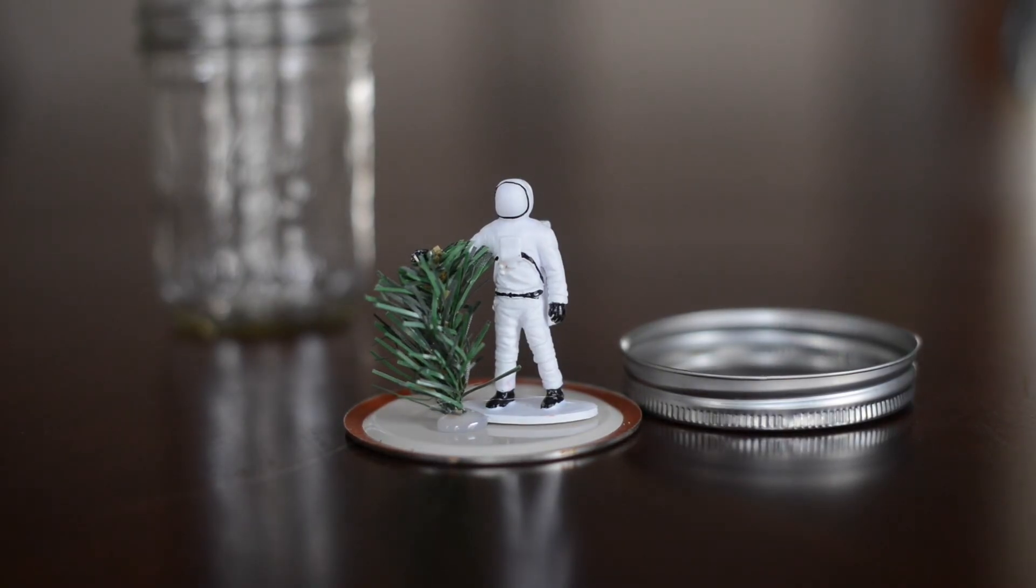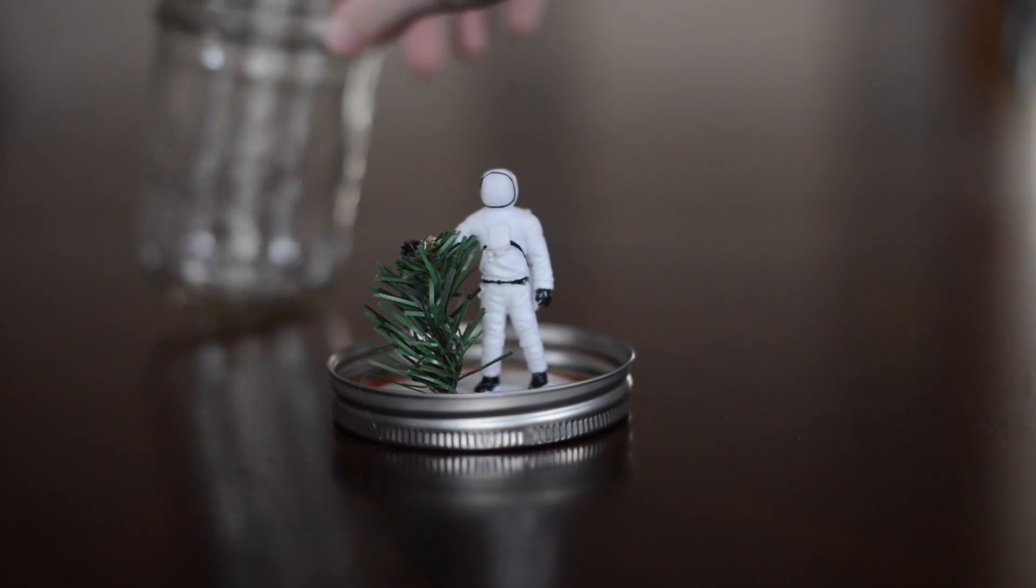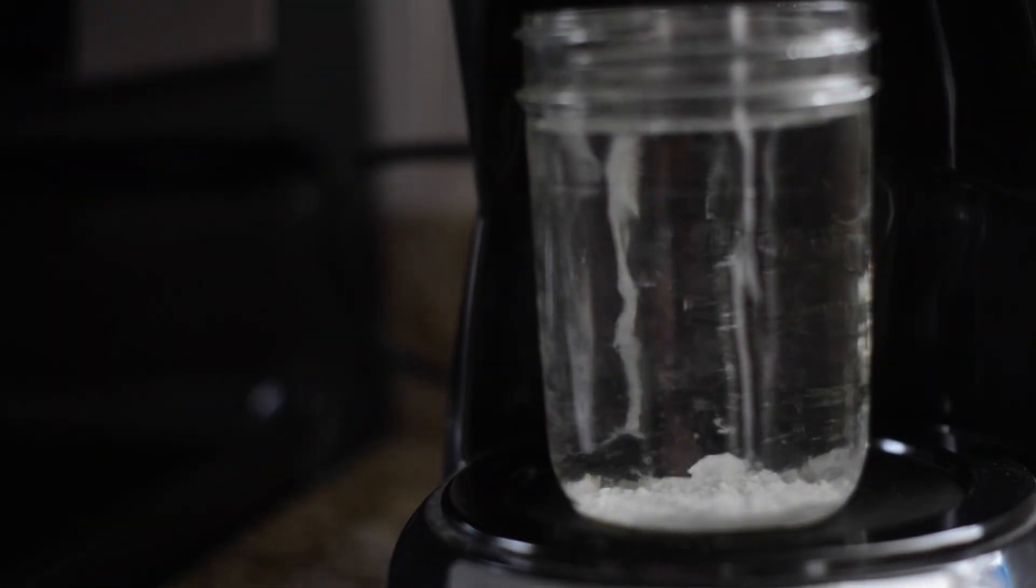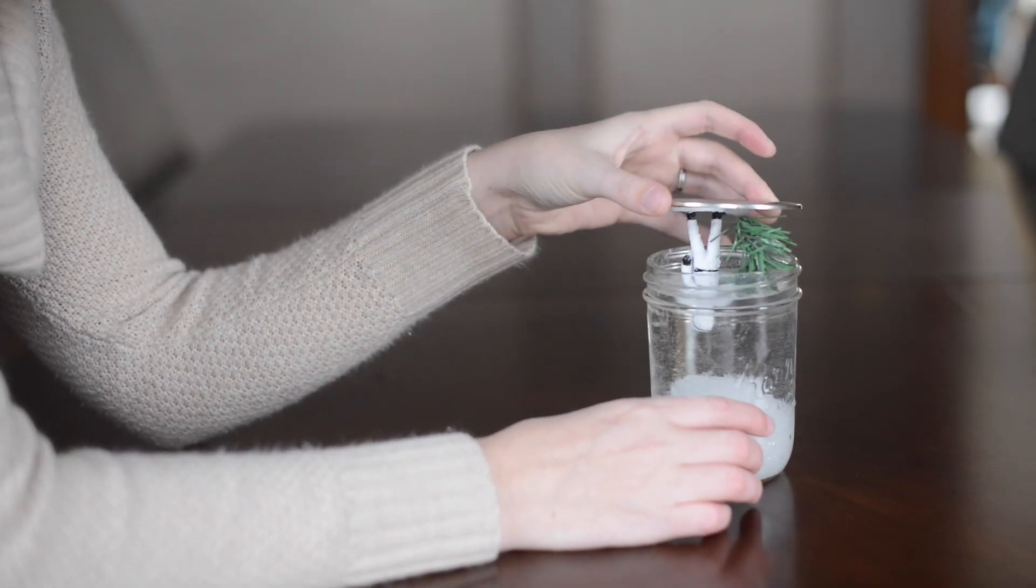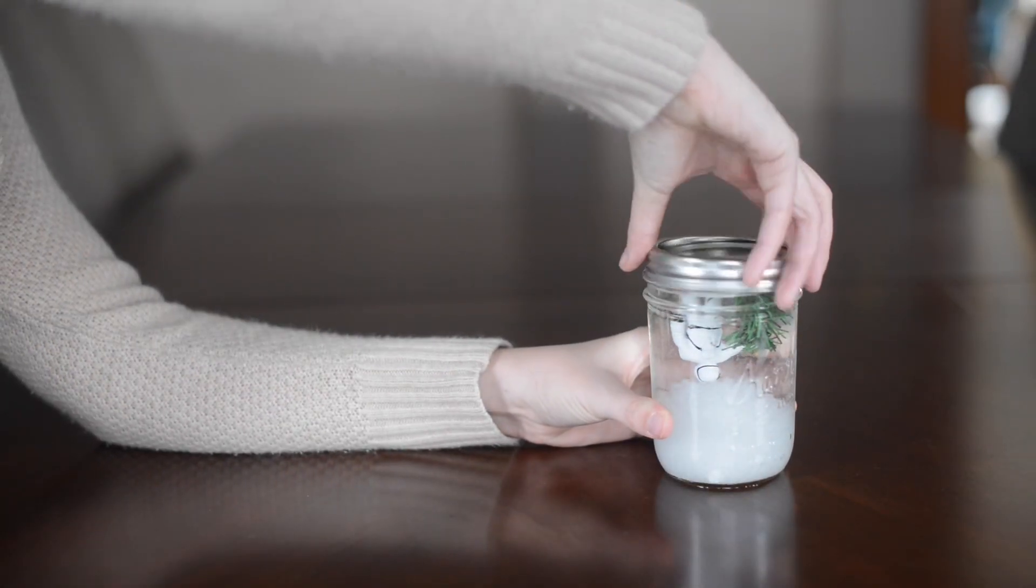And then you glue your little figurines to the top of the lid or the underside of the lid, I should say. And then we heated our benzoic acid in water on our coffee maker for about 15 minutes. You don't want it to boil. And then as it cooled, you can see it created these beautiful snowflakes.